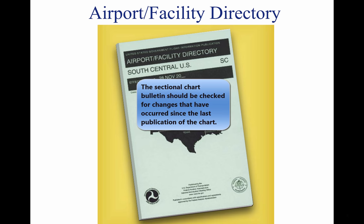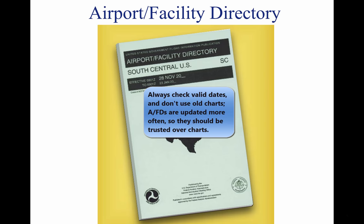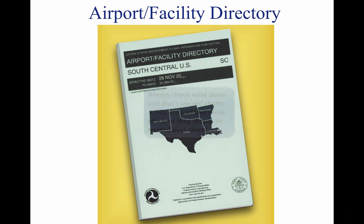The Sectional Chart Bulletin subsection should be checked for major changes that have occurred since the last publication date of each sectional chart being used. Remember, the chart may be up to six months old. The effective date of the chart appears at the top of the front of the chart. The AFD generally has the latest information pertaining to such matters and should be used in preference to the information on the back of the chart if there are differences.